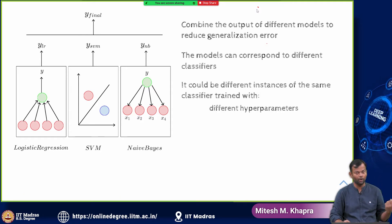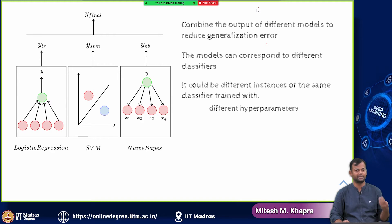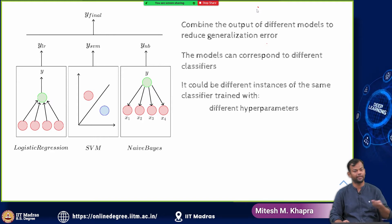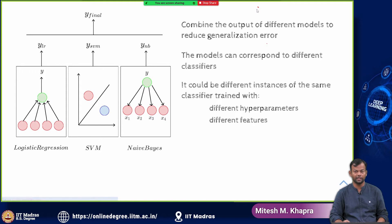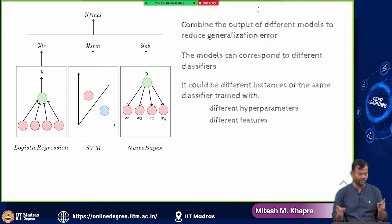For example, all three could be neural networks but with a different number of layers or a different number of neurons in each layer. They could also be trained with different features.